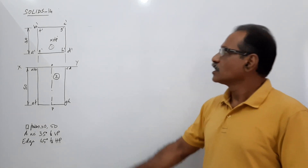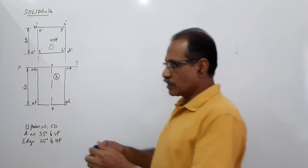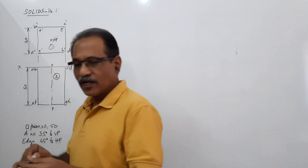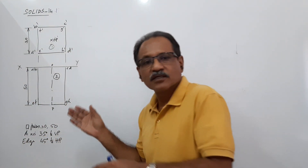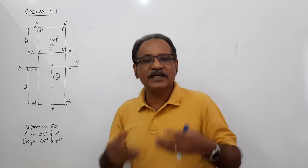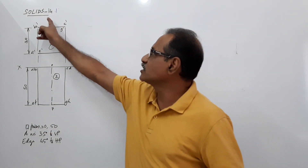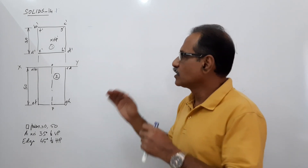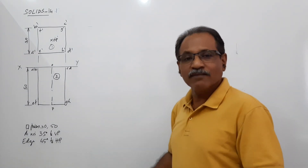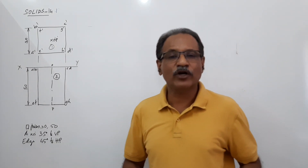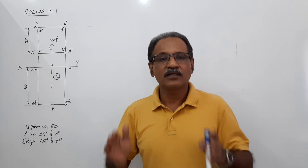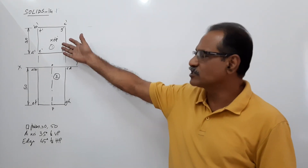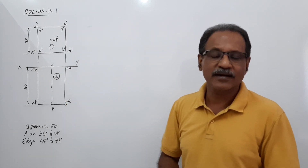Hi students. This is question number 14, video 14.1. We are drawing the same square prism from question 14, but instead of the redrawing method, we will use the auxiliary projection method. We start with the same simple position elevation and plan.